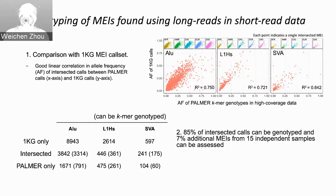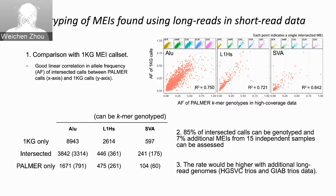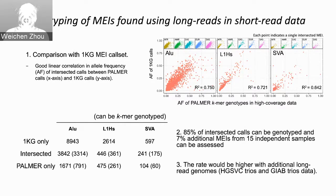Based on the results, we can genotype 85% of intersected calls using the K-mer method. More importantly, we can add 7% additional mobile element insertion calls from 15 independent samples. We are now working on extending this to the HGSVC trials and genomic bottom trials data with additional long-read sequenced genomes. We are also improving the genotyping model in Palmer and hope to get it online soon, and we can expect results to be better in the future.